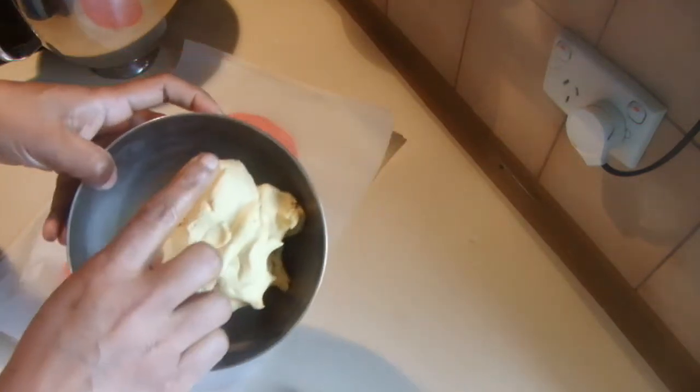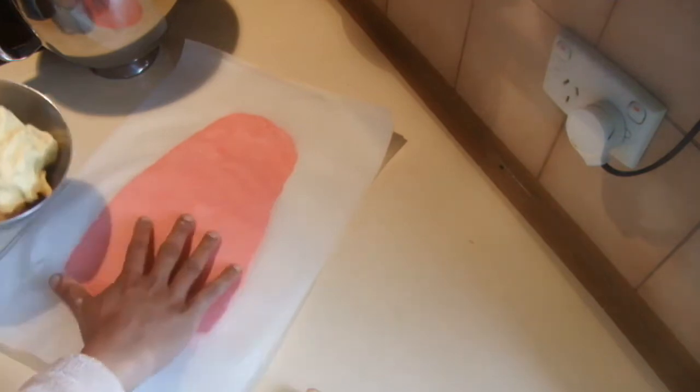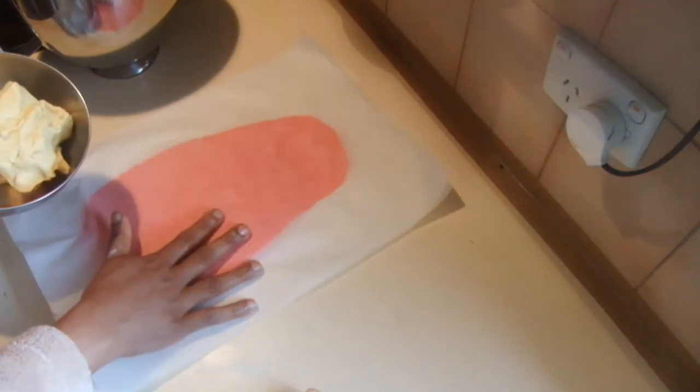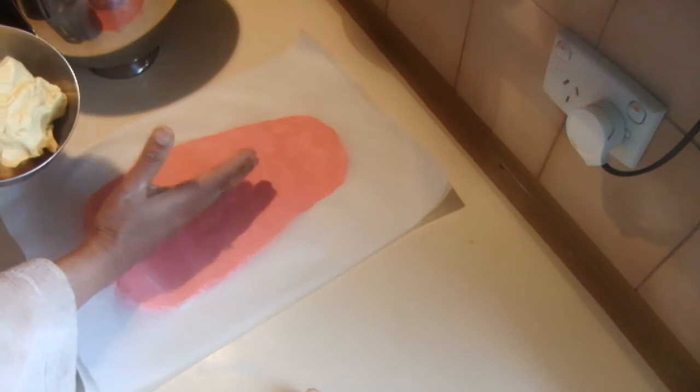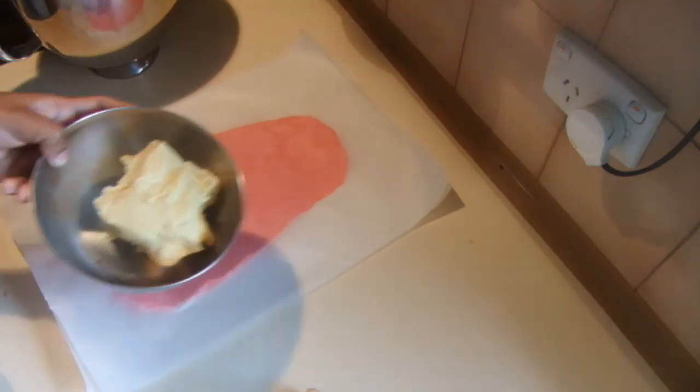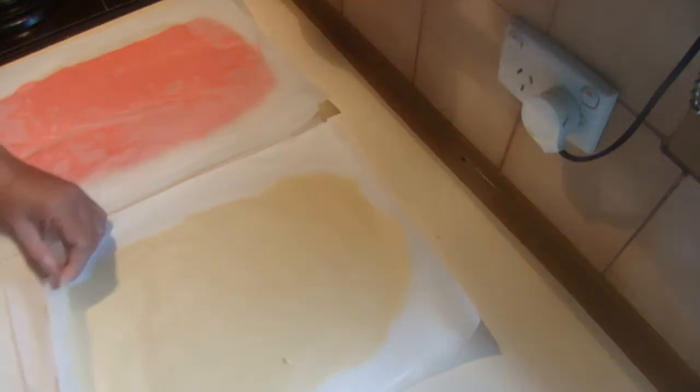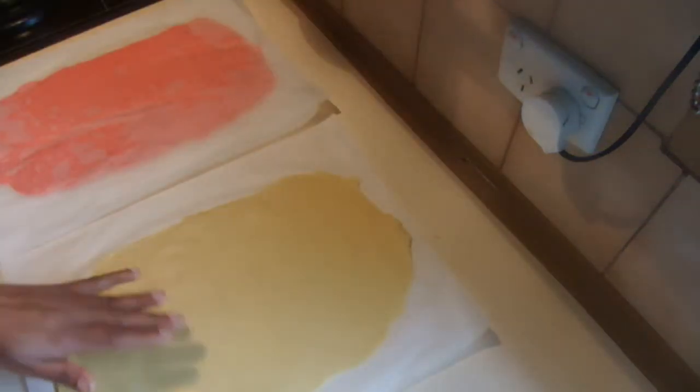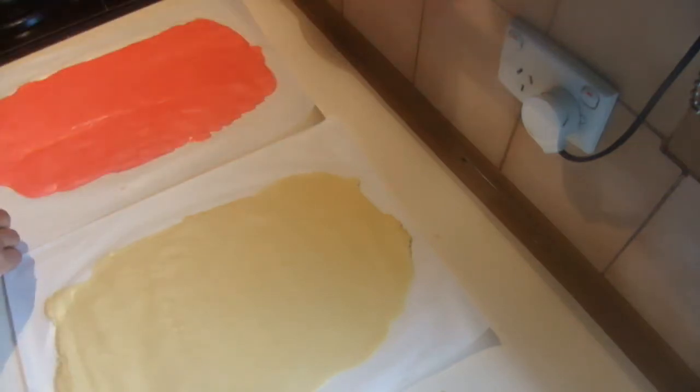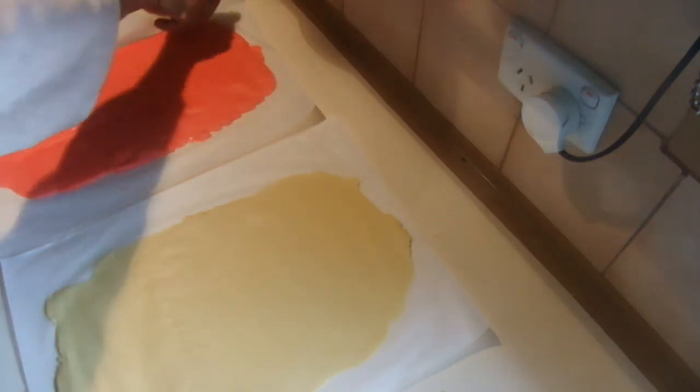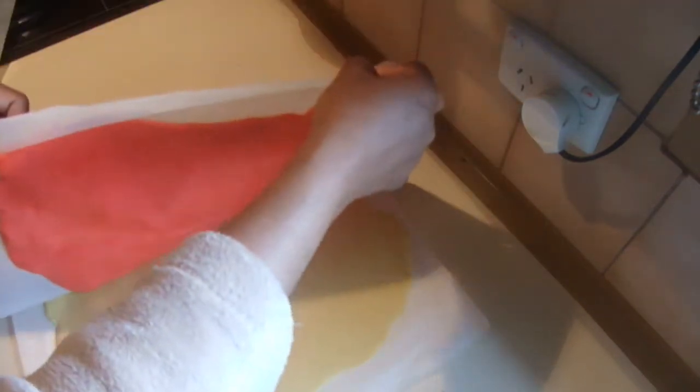Do the same thing with the other dough between two sheets of baking paper, exactly the same size as the first one. After rolling both, remove the papers and put one dough on top of the other.